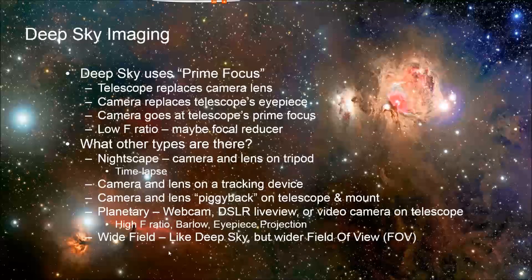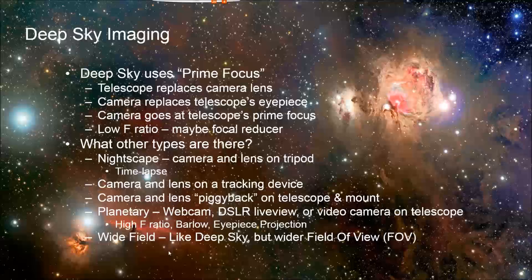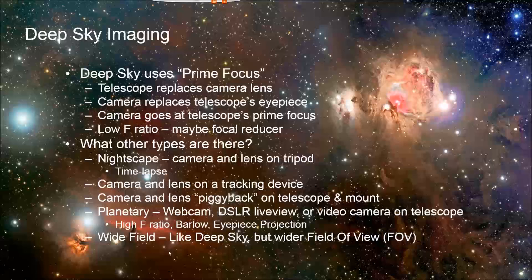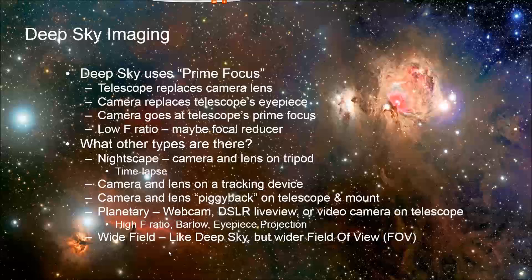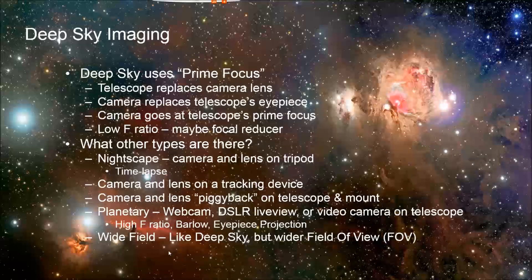Planetary imaging generally involves some type of video, whether it's a webcam, a DSLR using live view or video, or an actual video camera on a telescope. That's a very different approach compared to deep sky, because you're doing what's called lucky imaging — taking as many frames as possible and hoping that a few will catch the Earth's atmosphere being clear over a given section of the object. Planetary also typically involves a lot of magnification and a high focal ratio, using barlows or even eyepiece projection.